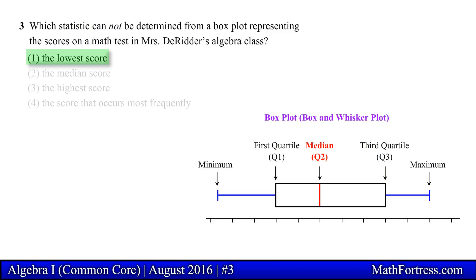the lowest score. The lowest score is also known as the minimum value. This statistic can be obtained from the box plot. It will be the point located at the beginning of the left whisker.